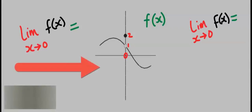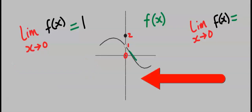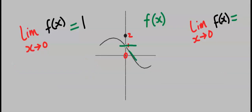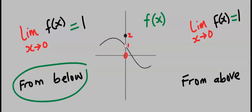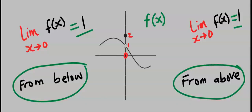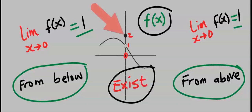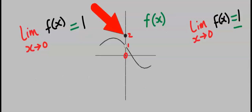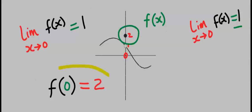Consider this question: the approach from the left is one, while the approach from the right is also one. Hence, from below is one and from above is also one. We conclude that the limit of f(x) exists. Likewise, we can write this statement to mean that f of zero is equal to two.